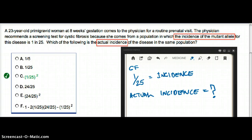In this question, a 23-year-old primigravid woman at 8 weeks gestation comes to the physician for a routine prenatal visit. The physician recommends a screening test for cystic fibrosis because she comes from a population in which the incidence of the mutant allele for the disease is 1 in 25.